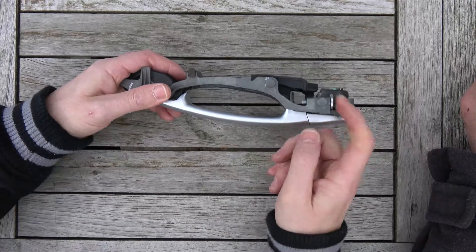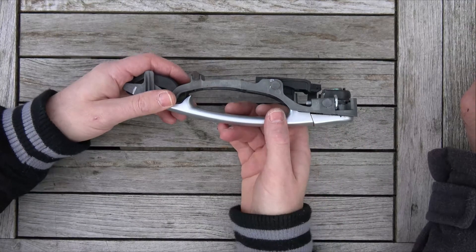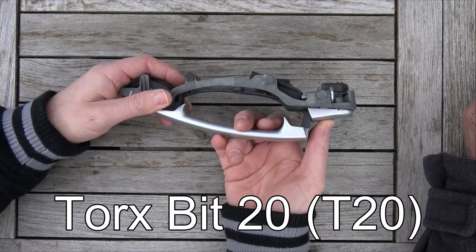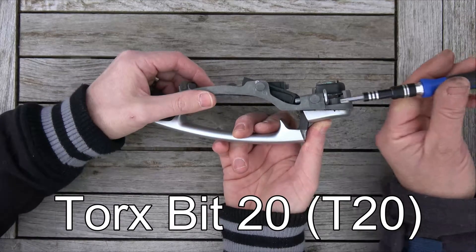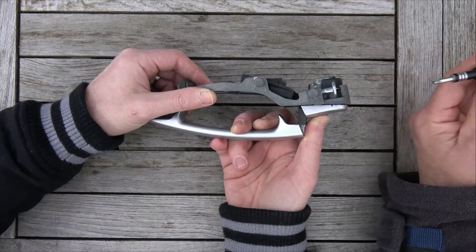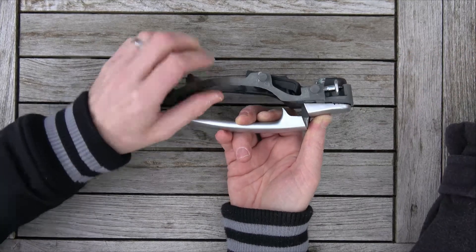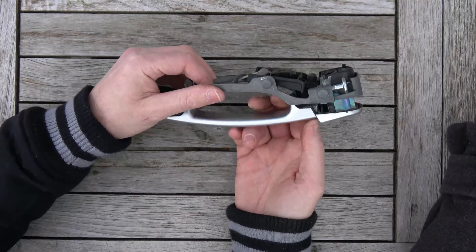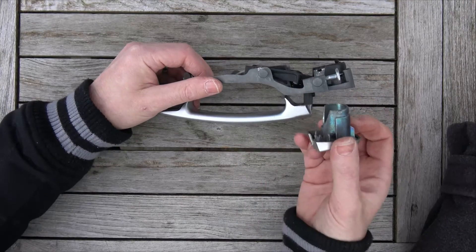First things first, we need to undo this 12 turns using a T20 and holding this out like that. There we go, so that is 12 revolutions. You can see now that it's locked into place and the barrel comes out.